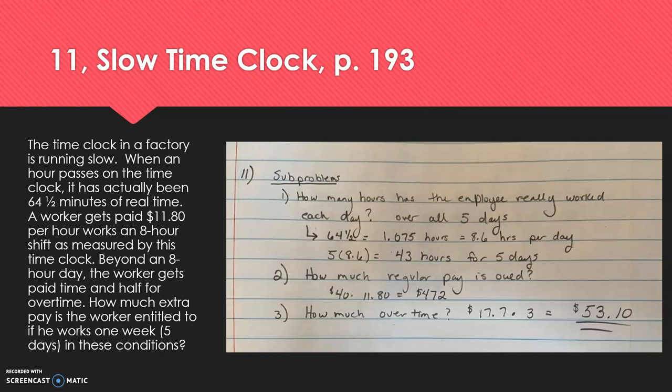The next question that you're asked to solve is number 11, slow time clock. It reads as follows: The time clock in a factory is running slow. When an hour passes on the time clock, it has actually been 64 and a half minutes of real time. The worker gets paid $11.80 per hour. He really works an eight-hour shift as measured by this clock. Beyond an eight-hour day, the worker gets paid time and a half for overtime. How much extra pay is the worker entitled to if he works one week, five days in these conditions?